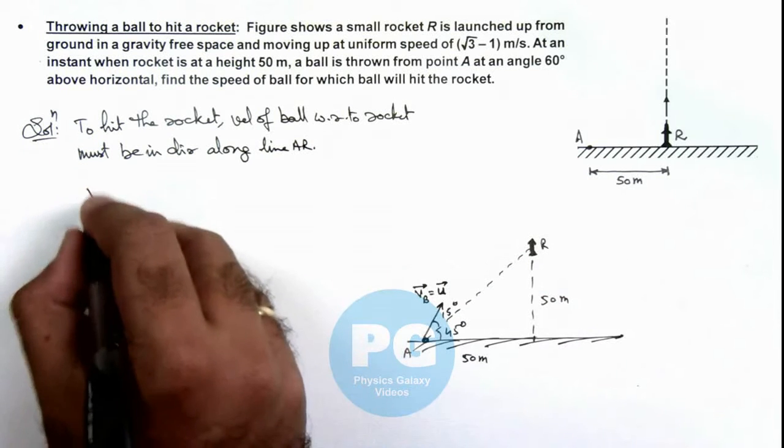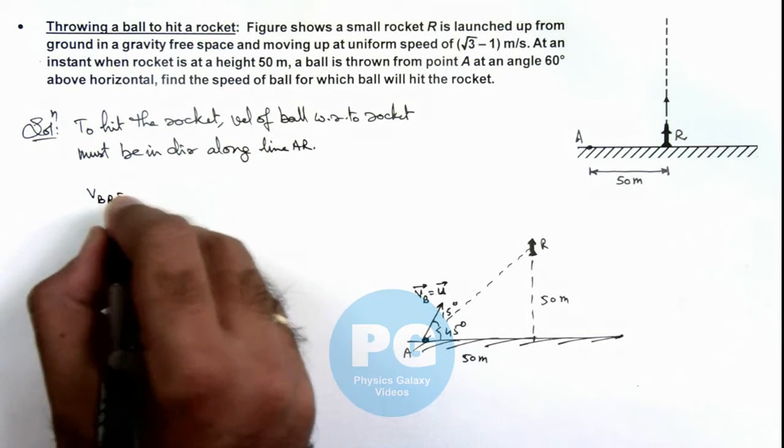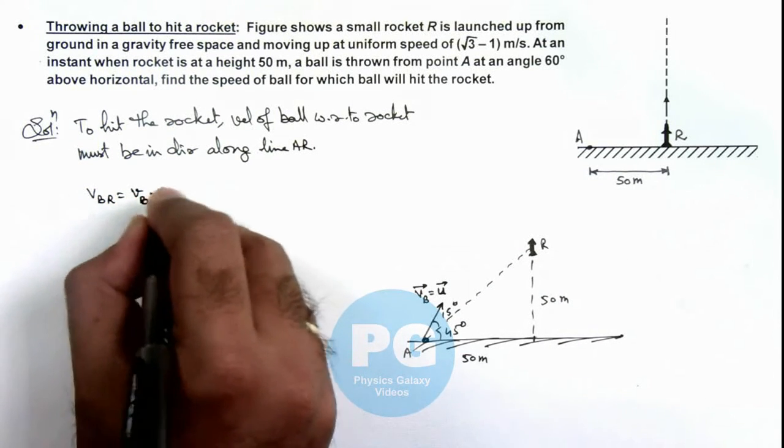So velocity of ball with respect to rocket we can write as v_b minus v_r.